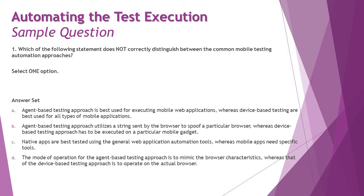Option C states: native apps are best tested using the general web application automation tool, whereas mobile apps need specific tools. Now that's a different thing — it's actually the other way around. It is mobile apps that are tested using general web application tools, whereas native apps are best tested using specific tools. So this option contradicts the concepts we have explored and is not the correct statement. Let's confirm with option D before finalizing.